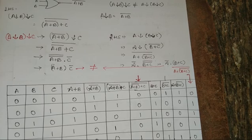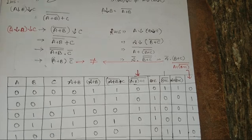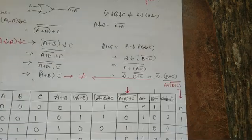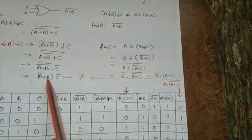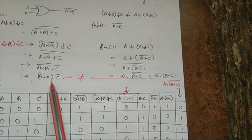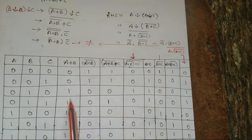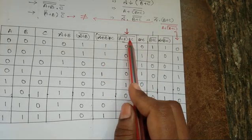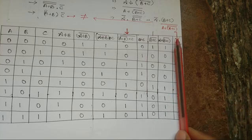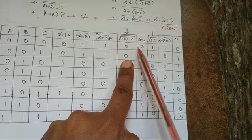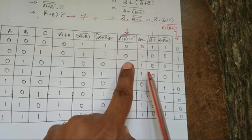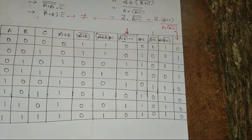In the examination they may also ask about the non-associativity of the NAND gate. The second method is the truth table method, using inputs A, B, C. I have taken the ABC values, computed A plus B and all intermediate values, and filled in the truth table columns for the LHS and RHS. Comparing the two columns, here 0 equals 0, but here it is 0 versus 1 — if any one value does not match, they are not equal. This proves the non-associativity of the NOR gate.